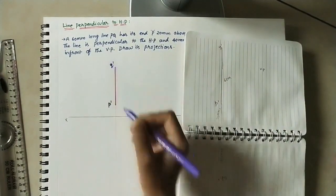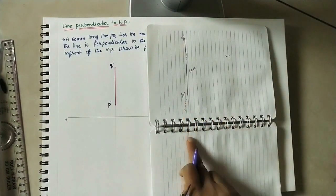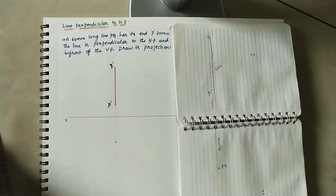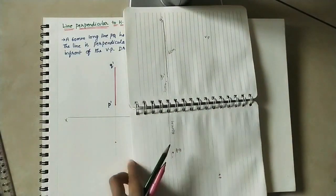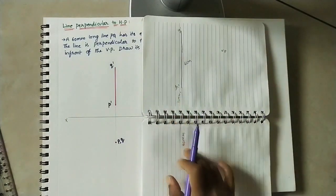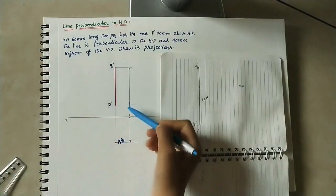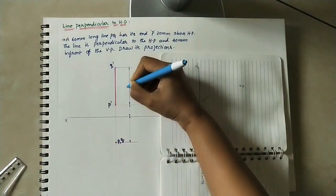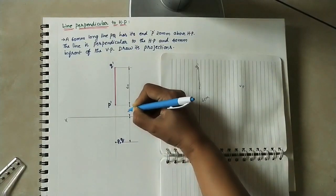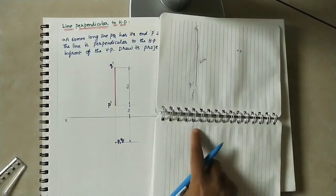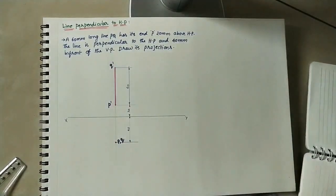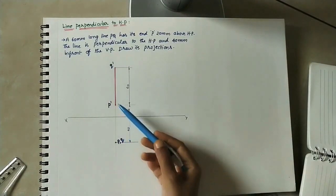On the same projector line, mark a dot at 4 cm (40 mm) below the XY line — this is the top view. Label it as small p, q (with a comma) since both P and Q coincide at one point. Add dimension lines: 60 mm for the front view length, 20 mm for the gap above XY, and 40 mm for the distance of the top view point below XY. Do not write 'mm' on the dimension line.